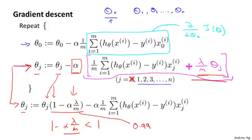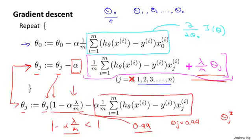So the effect of our update to theta j is, we're going to say that theta j gets replaced by theta j times 0.99. So theta j times 0.99 has the effect of shrinking theta j a little bit towards zero. This makes theta j a bit smaller, or more formally, this makes the squared norm of theta j a little bit smaller. And then after that, the second term here is actually exactly the same as the original gradient descent update that we had before we added all this regularization stuff.